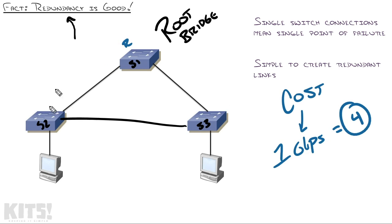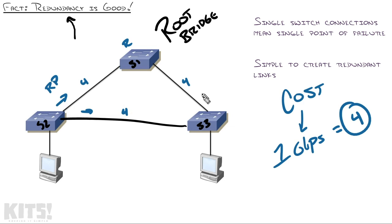So if this switch is the root, then Switch 2 says: what's the best way to get to the root? I could go this way and it's a cost of 4, or I could go through Switch 3 and it's a cost of 4 plus 4, which would be 8. This is definitely the best way — I'm going to call that my root port. Switch 3 does the same thing: this is my best way, that'll be my root port because it's only a cost of 4. The other way would be a cost of 8. Once they've picked their root port, the switches look at all the redundant links — all the backup ways to get to the root bridge — and realize those could be loops, so they block them.